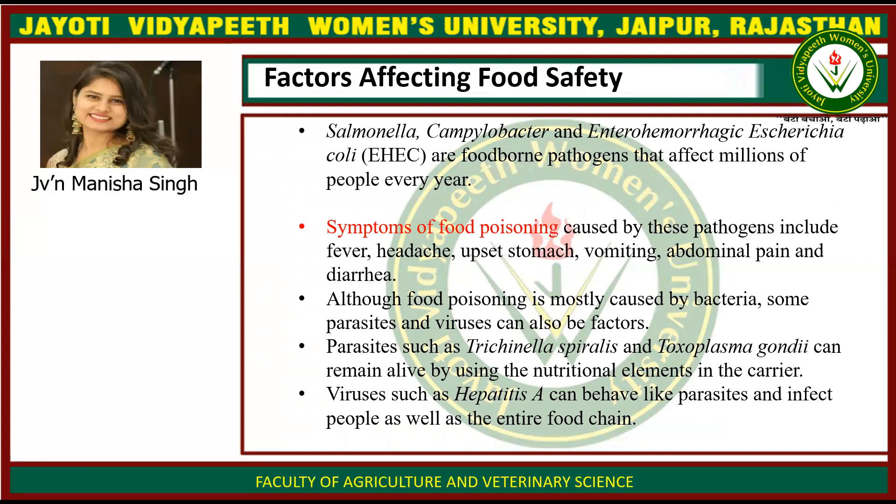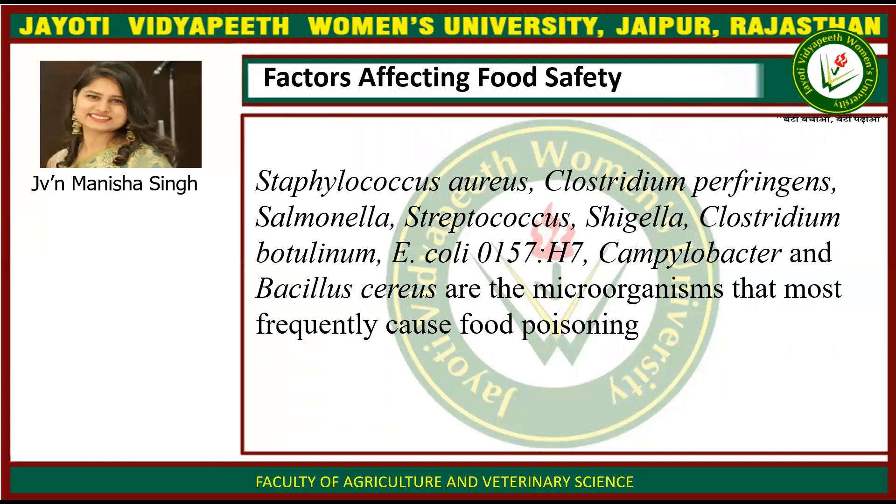Although food poisoning is mostly caused by bacteria, some parasites and viruses can also be factors. Parasites such as Trichinella spiralis and Toxoplasma gondii can remain alive by using nutritional elements in the carrier. Viruses such as Hepatitis A can behave like parasites and infect people as well as the entire food chain.